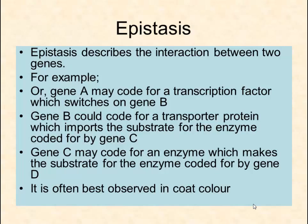Epistasis is the interaction between two genes. Here are some examples: maybe gene A codes for a transcription factor which switches on gene B. A transcription factor is a protein which binds to DNA and switches on another gene. So gene A codes for a protein which binds to the DNA just upstream of gene B and switches on transcription of gene B. Gene B could code for a transport protein which imports the substrate needed by the enzyme coded for by gene C.